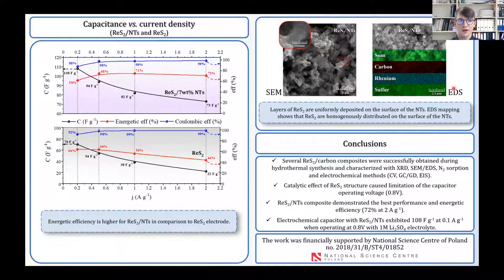SEM and EDS images show that the layers of ReS2 are homogeneously distributed on the surface of the nanotubes. And just to summarize this work, we have prepared several carbon ReS2 materials. It occurs that the best performance was reached for rhenium disulfide deposited on the nanotubes. Sadly, the catalytic effect of the ReS2 structure caused the limitation of the capacitor operating voltage up to 0.8V.